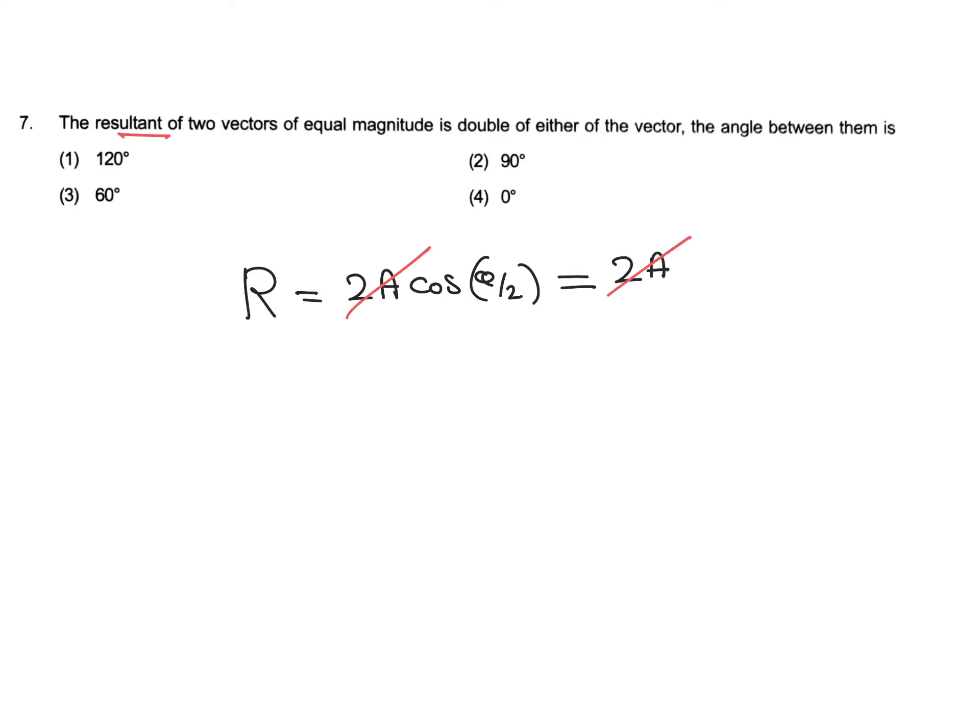So what will happen? This 2a and this 2a get cancelled. So we can write the value of cos theta by 2 should be equal to 1. That means cos theta by 2 equals 1 when theta by 2 equals 0, or theta equals 0.